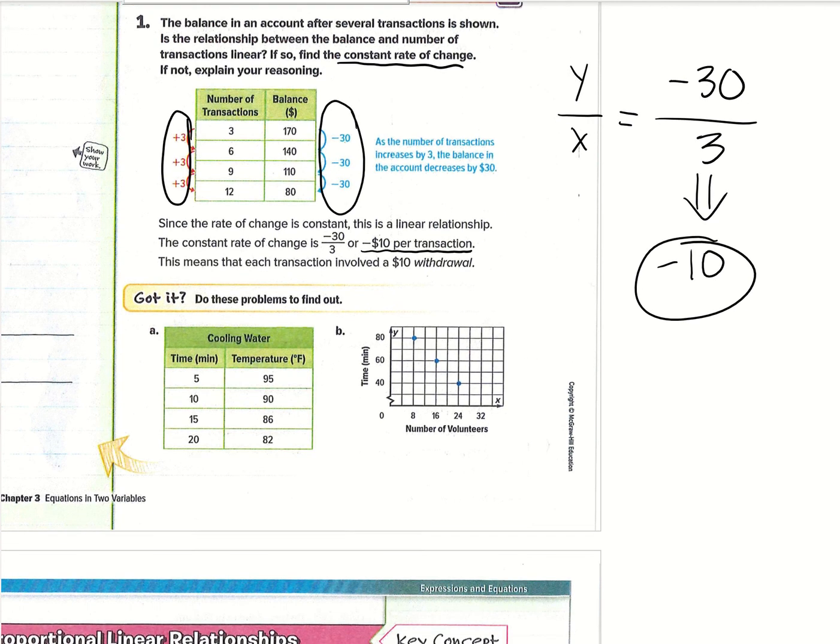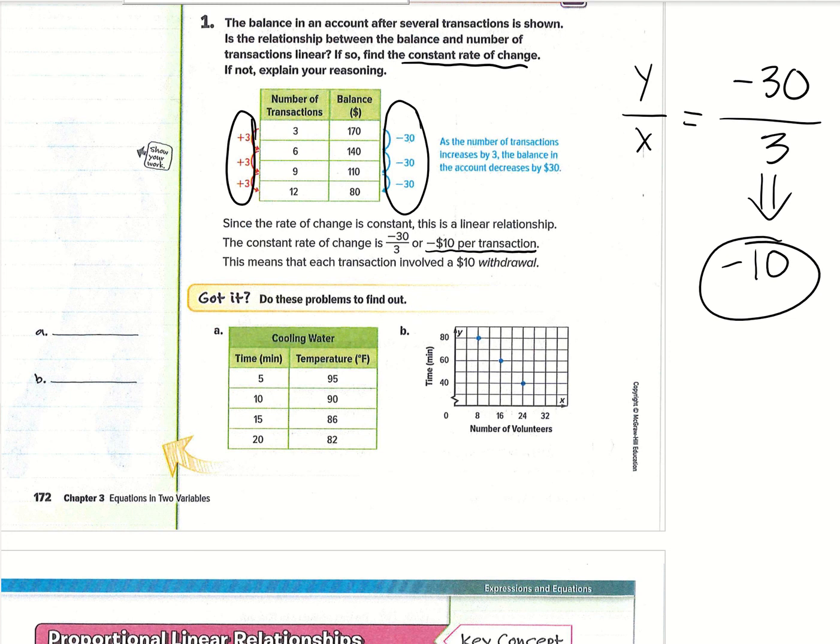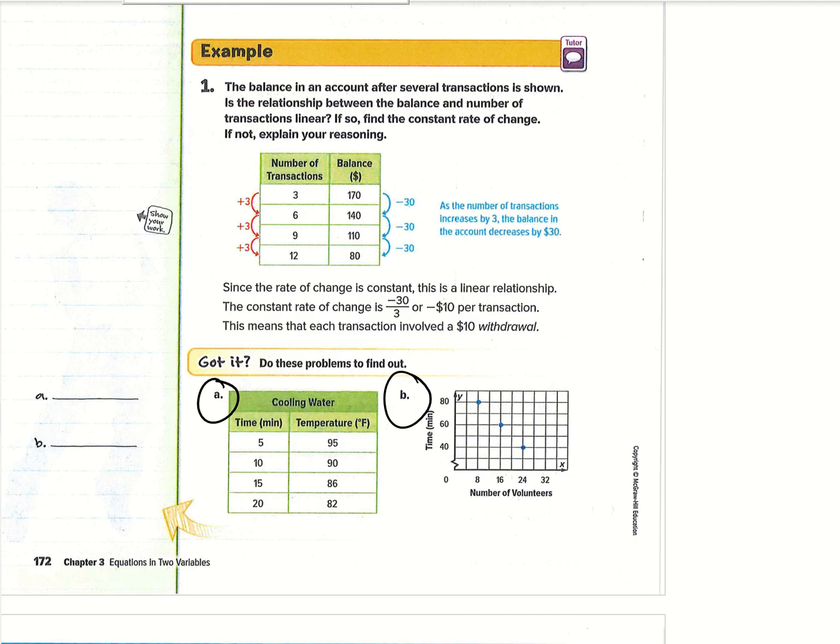I'm going to have you guys go ahead and try out problem A, see if you can figure out that rate of change, and also try out problem B. We haven't looked at a graph to find rate of change, but I want you to challenge yourself and see if you can do that just from this one. Once you've done A and B, that's actually going to be it for this lesson. Hopefully everything was clear and we'll talk about it in class. Let me know if you have questions and I will see you then.